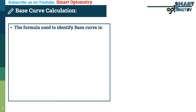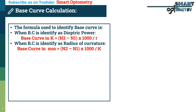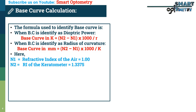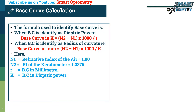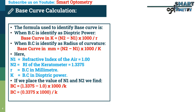The formula used to identify base curve of the cornea is: when base curve is identified as dioptric power, base curve in K equals n2 minus n1 multiplied by 1000 divided by r. When base curve is identified as radius of curvature, base curve in mm equals n2 minus n1 multiplied by 1000 divided by K. Here, n1 equals refractive index of air, i.e. 1; n2 is refractive index of the keratometer, i.e. 1.3375; r equals base curve in millimeters; and K equals base curve in dioptric power.